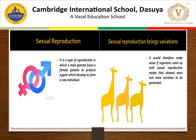Sexual reproduction is a type of reproduction in which a male gamete fuses with a female gamete to produce a zygote, which ultimately develops to form a new individual. It involves two individuals belonging to two different sexes — male and female. Sexual reproduction involves sex cells called gametes, made in reproductive organs. Male gametes come in contact with female gametes to form a zygote, which grows into an individual.